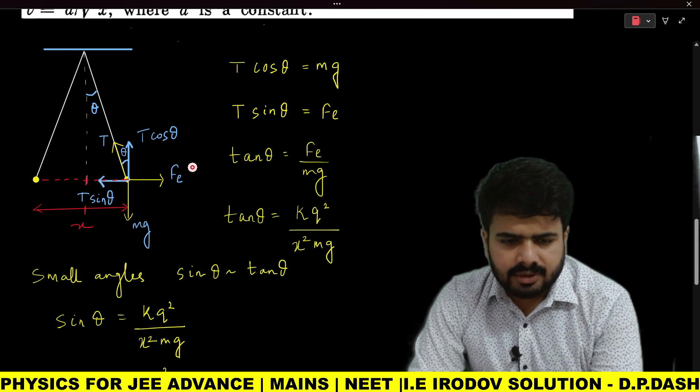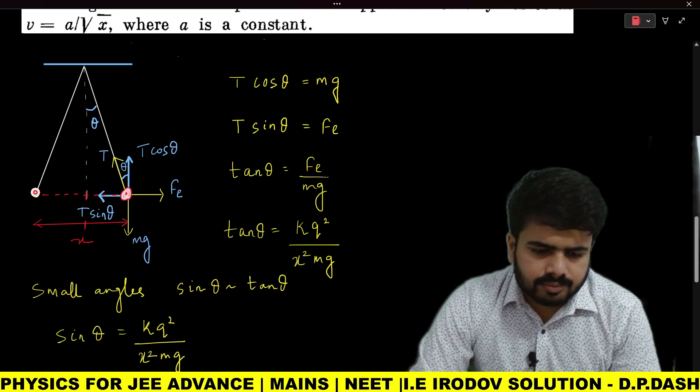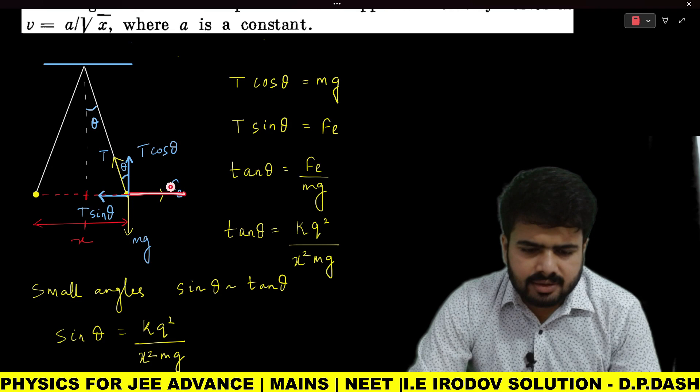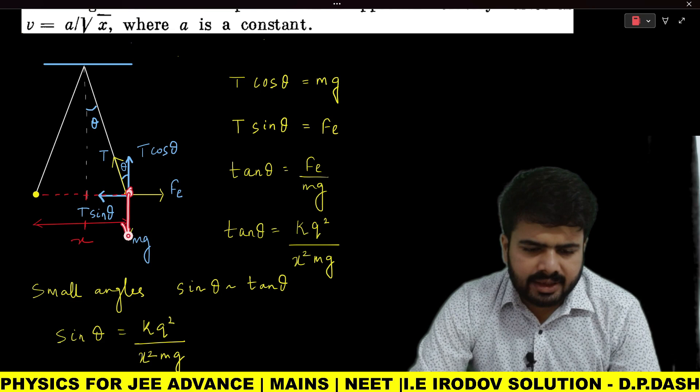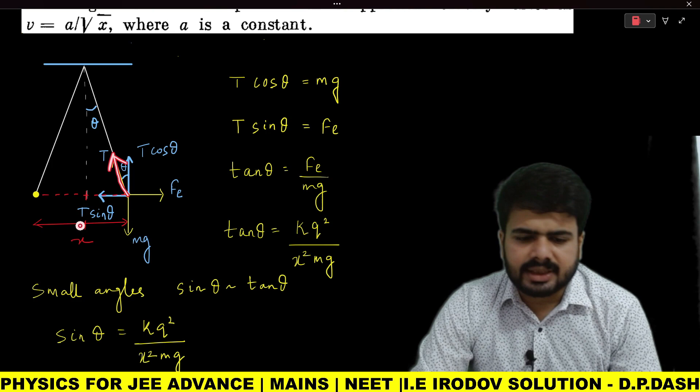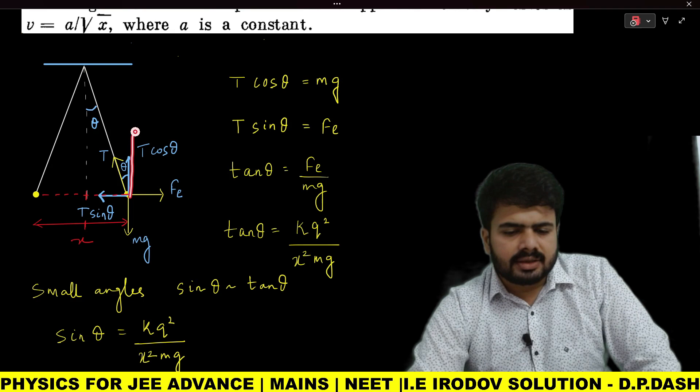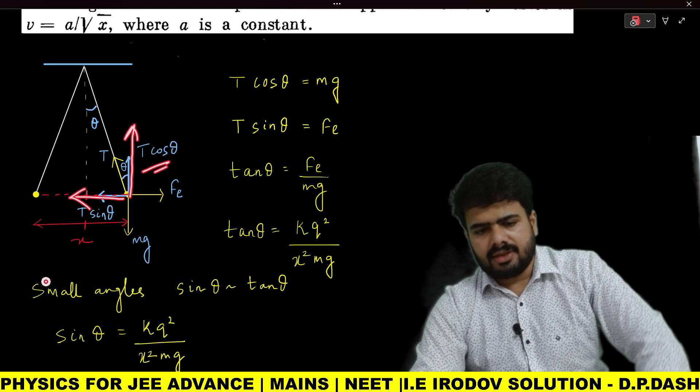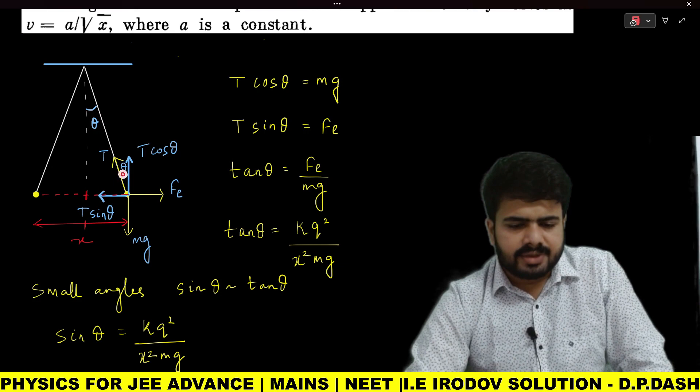Let us analyze this situation carefully. These two charged particles repel each other with electrostatic force Fe. In the free body diagram, mg acts in the downward direction and tension T acts along the string. This tension T has two components: T cos θ and T sin θ.